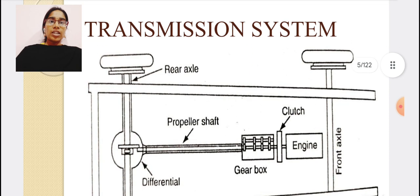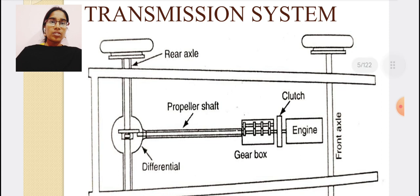Coming to the diagram of the transmission system, the transmission system consists of the engine, gearbox, propeller shaft, differential unit, and rear axle.